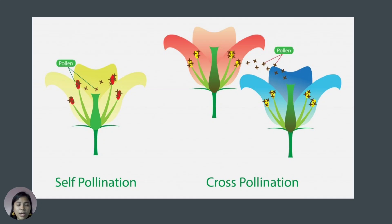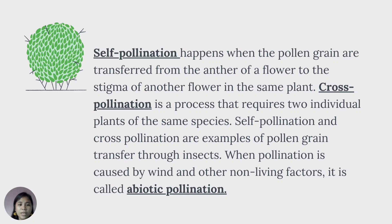Let us review: self-pollination happens when pollen grains are transferred from the anther of a flower to the stigma of another flower in the same plant. Cross-pollination requires two individual plants of the same species. Self-pollination and cross-pollination are examples of pollen grain transfer through insects. When pollination is caused by wind and other non-living factors, it is called abiotic pollination.